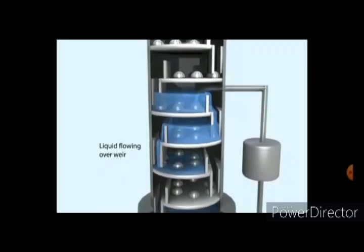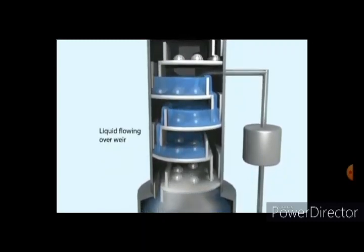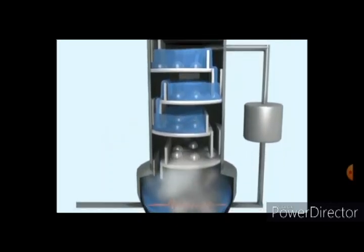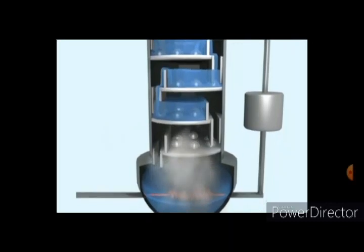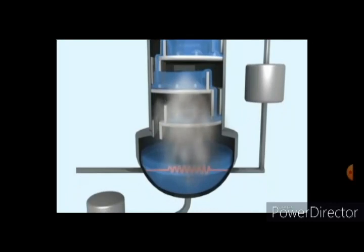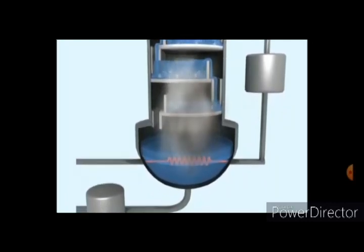The base of the distillation column contains a large volume of liquid consisting mostly of the liquid with higher boiling point. In our example, this would be water. Out of the base flows some of this liquid, some of which is heated in the reboiler and returned to the column. This is called boil-up.